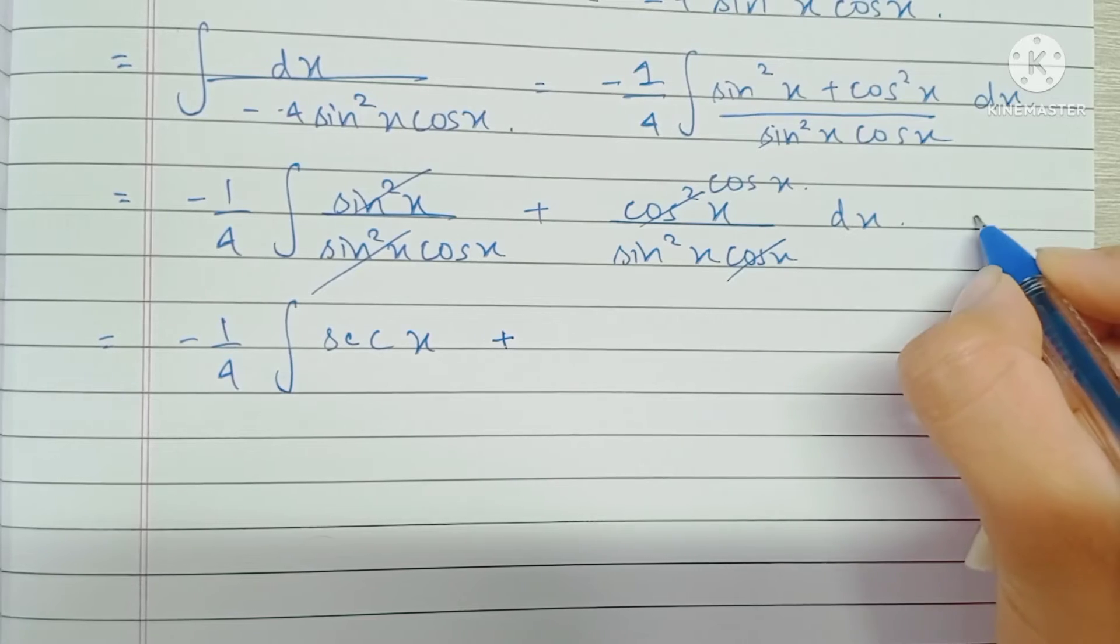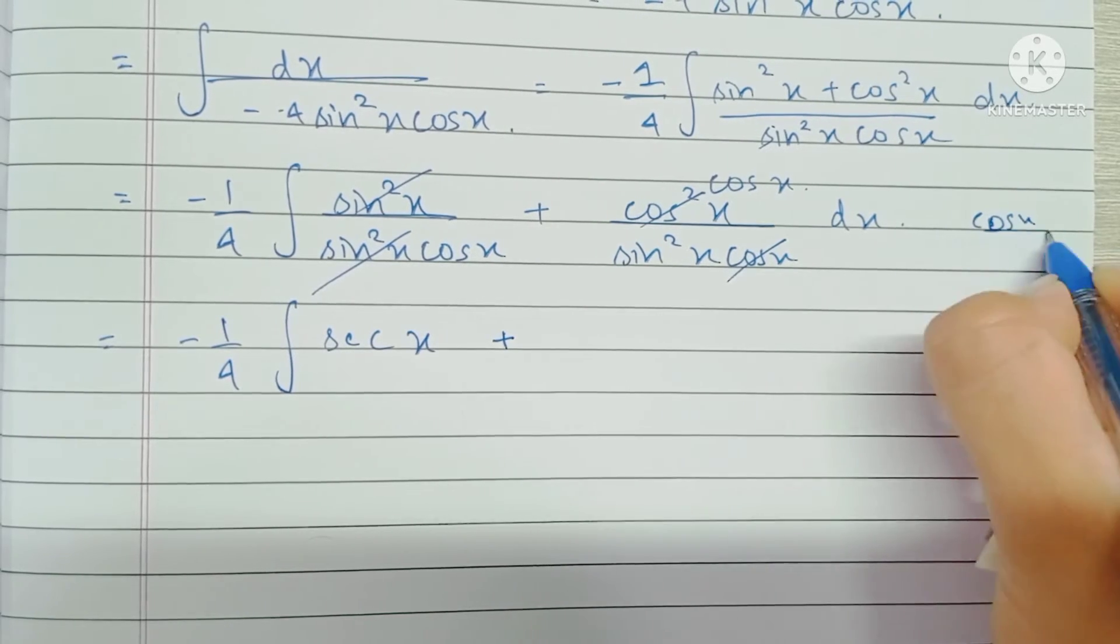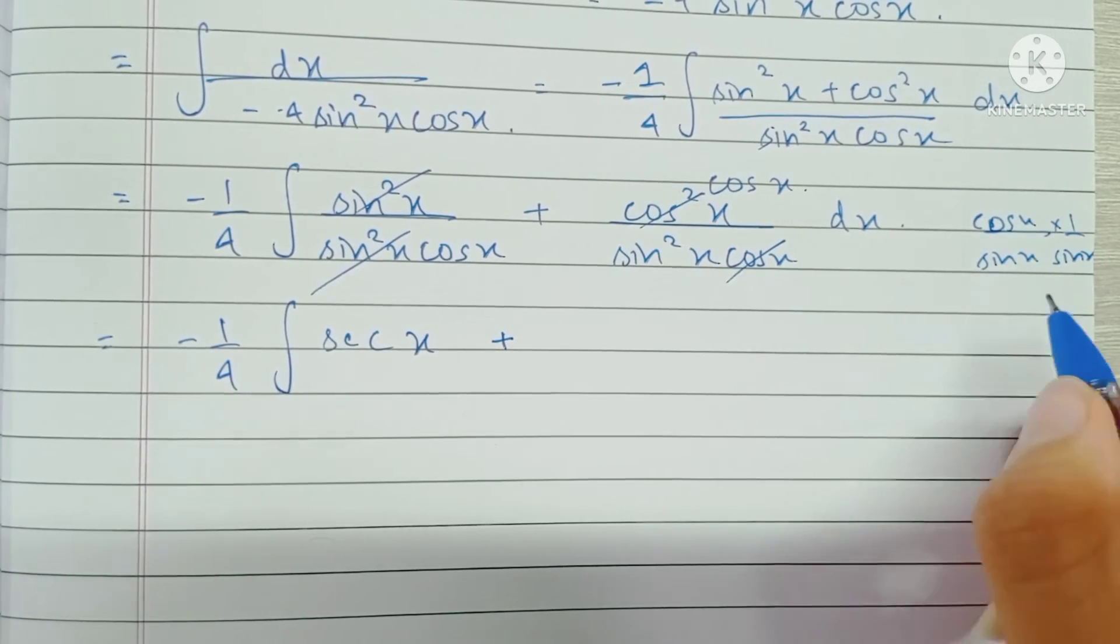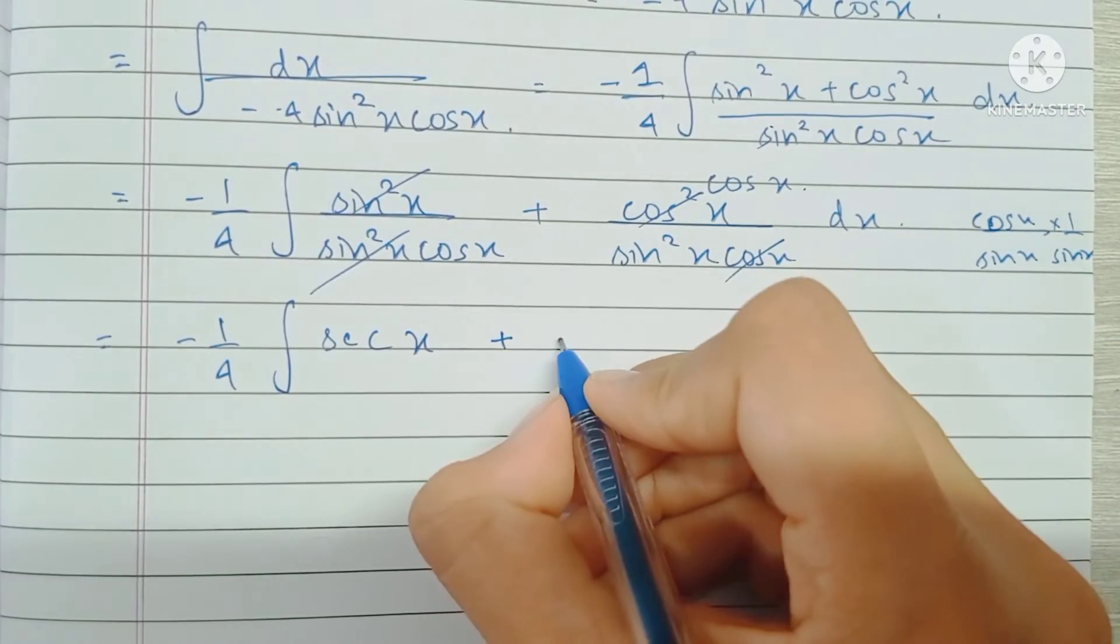So cos x by sine x becomes cot x and 1 by sine x becomes cosec x.